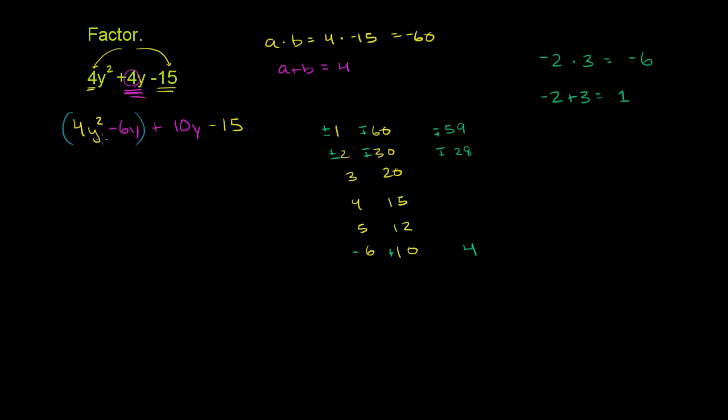Let's group these first two terms. And we can, because they have common factors here. They're both divisible by 2 and y. And then we're going to group these two guys. Both of them are divisible by 5.